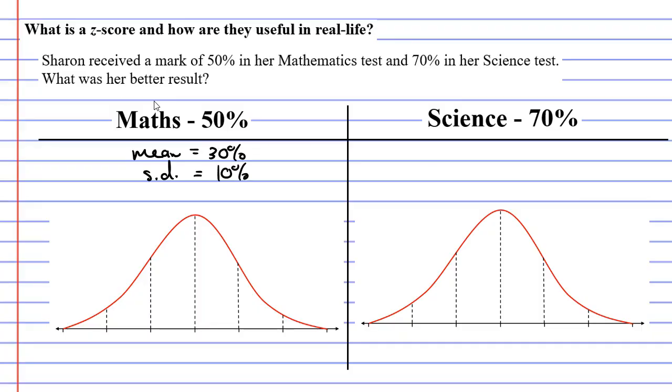Remember that the maths test had a mean of 30%, and it had a standard deviation of 10%. What about the science test? Well, let's say that the science test had a mean of 50%. So it had a higher mean. When we know this,